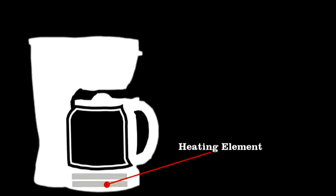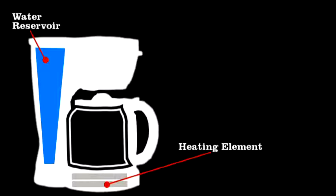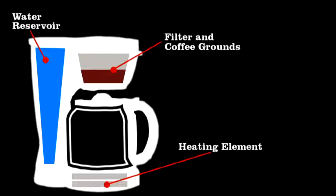Now the heater must be below the carafe to keep the coffee warm, yet it also needs to heat the water for brewing, and since the grounds are at the top, that presents a problem. How do you get the water from here to here?